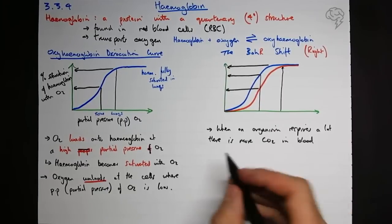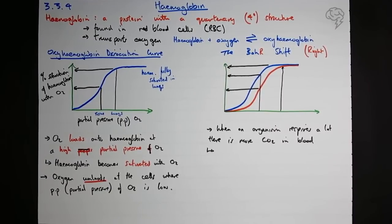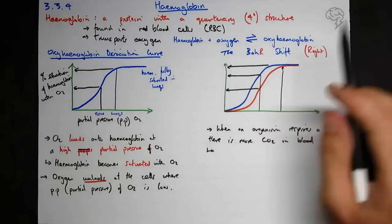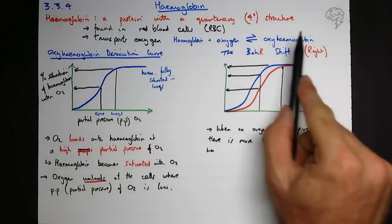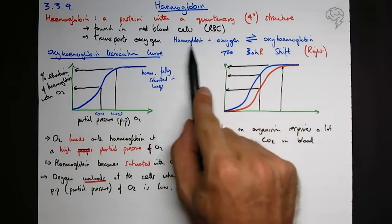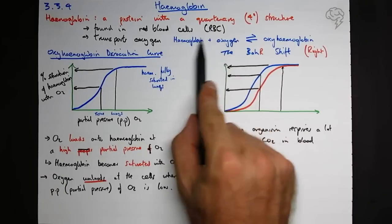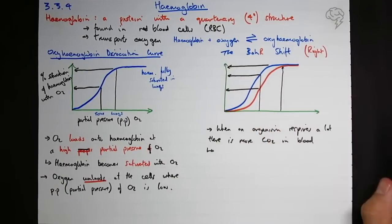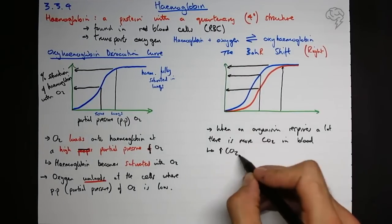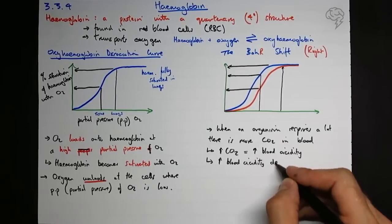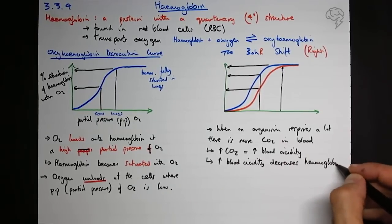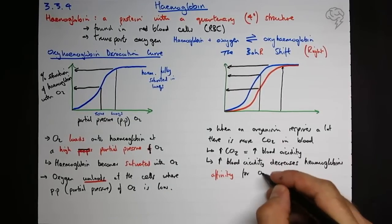Okay, so basically if you've got more CO2, the blood becomes more acidic, and that decreases hemoglobin's affinity for oxygen. So hemoglobin's affinity for oxygen is how much it wants to combine with oxygen to form oxyhemoglobin.